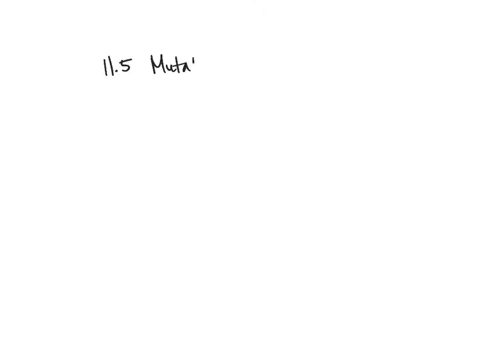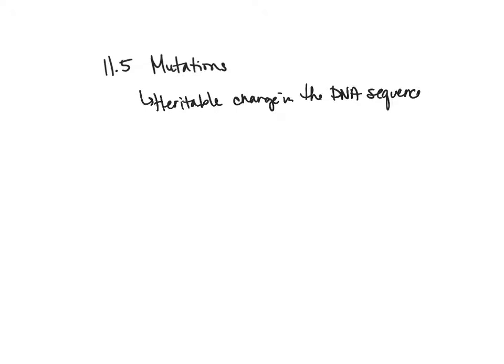In section 11.5, we're going to talk about mutations. A mutation is a heritable change in the DNA sequence of an organism. This isn't just a change that won't be passed on — that's why it mentions 'heritable' in the definition. It's something that will be passed along because it's a more permanent change in the DNA sequence.